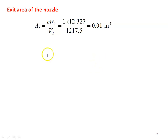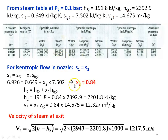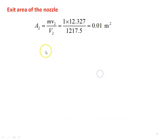So we have calculated: the quality X2 is 0.84, the velocity is 1217.5 meters per second, and the exit area is 0.01 meter square.